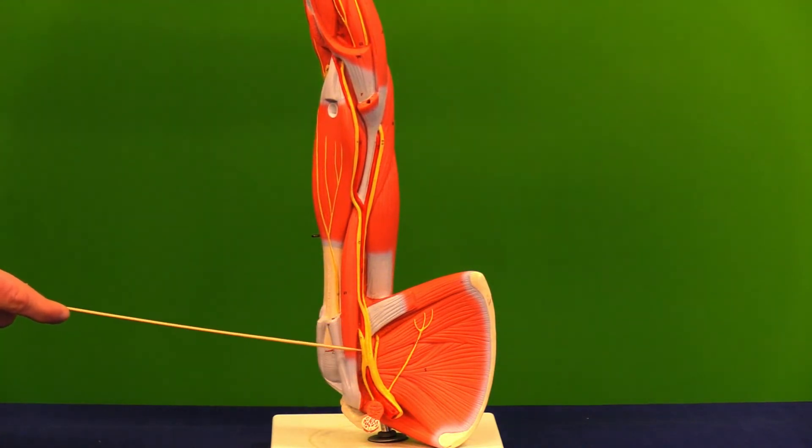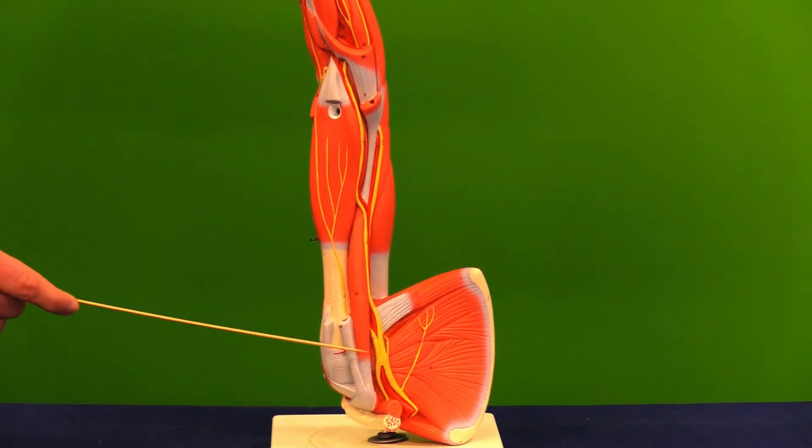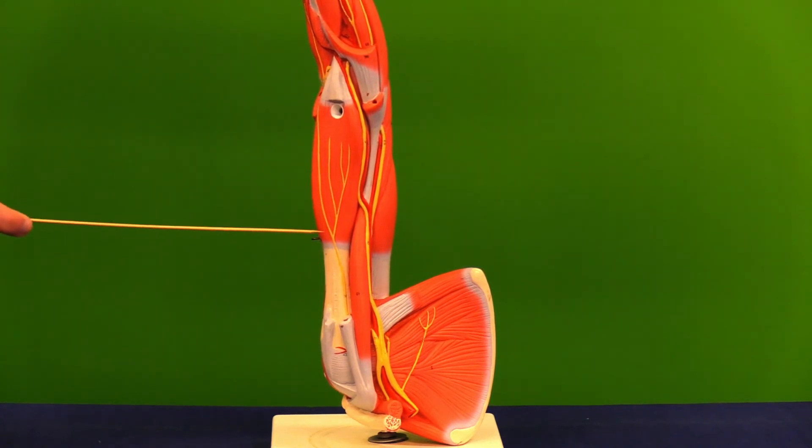Opposite that, we can see a big nerve that runs to the anterior part of the arm, superficially known as the musculocutaneous nerve.